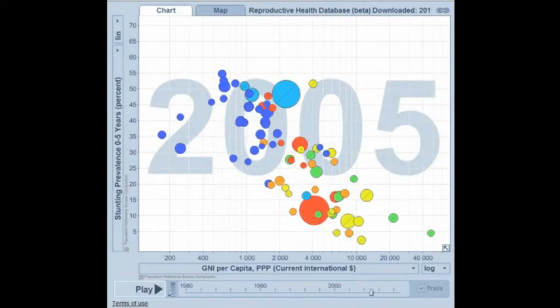Stopping here in 2005, we have a snapshot view of the world that helps us see some very interesting relationships between malnutrition and economic growth.